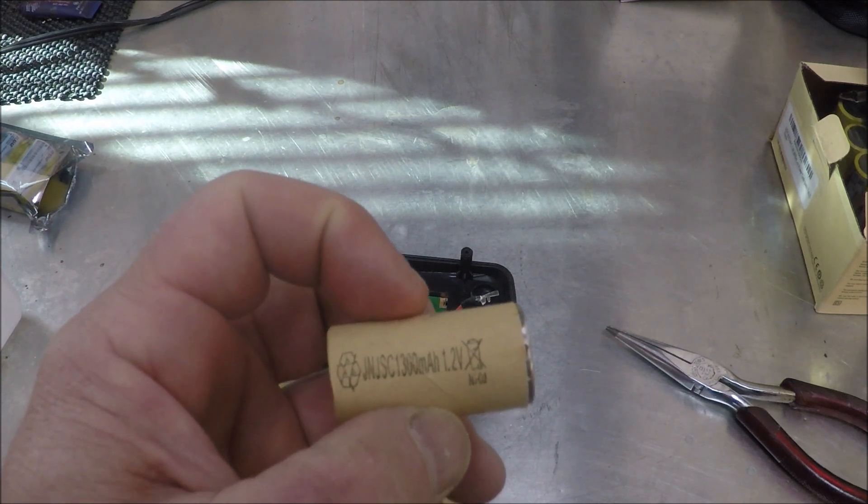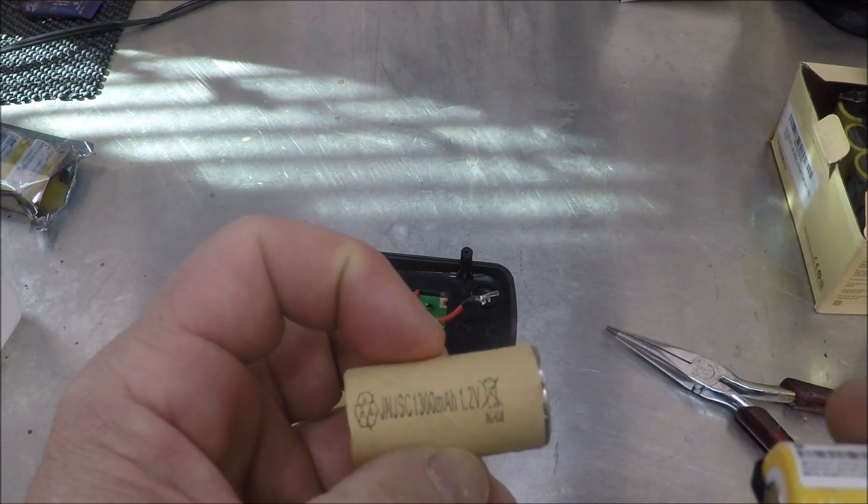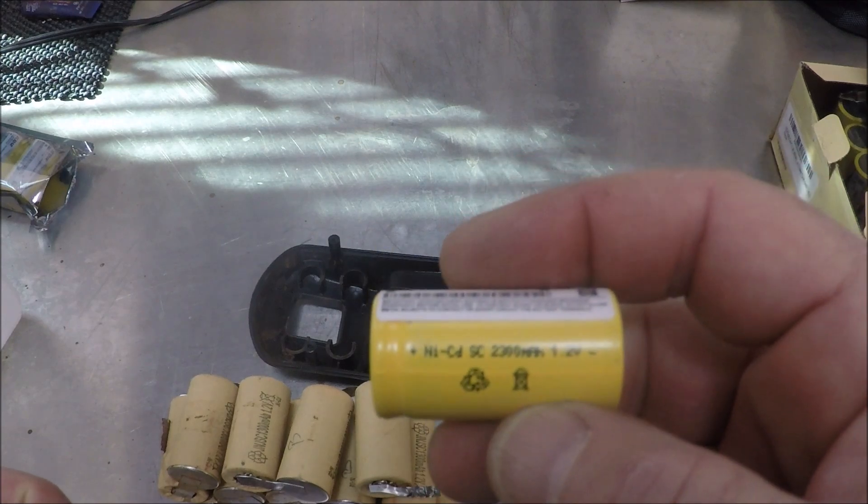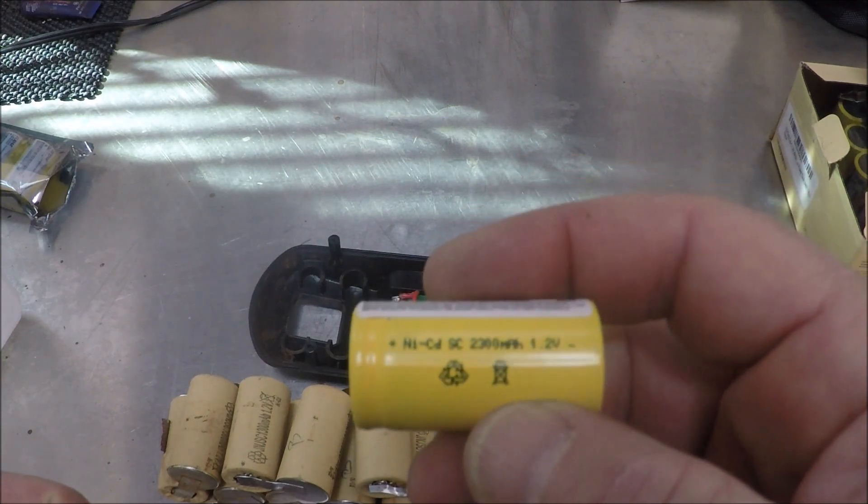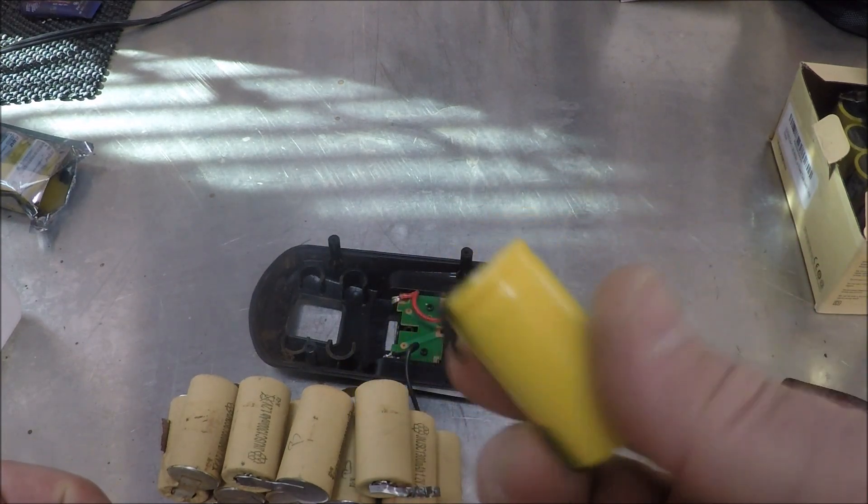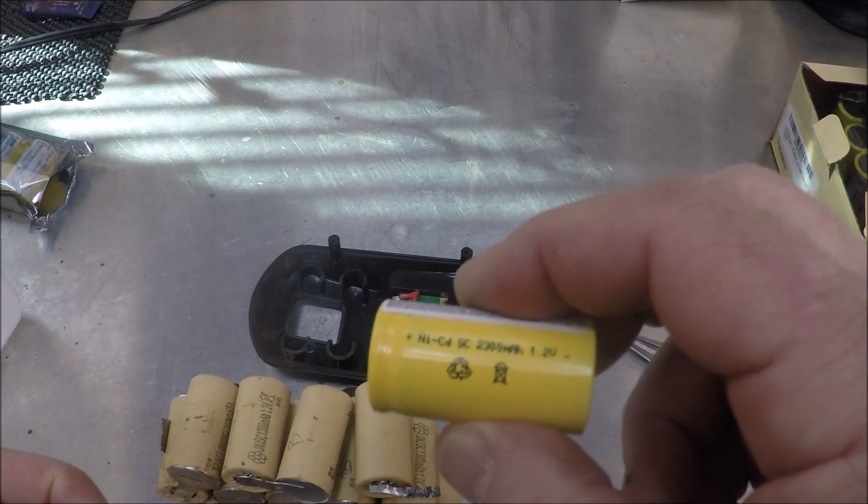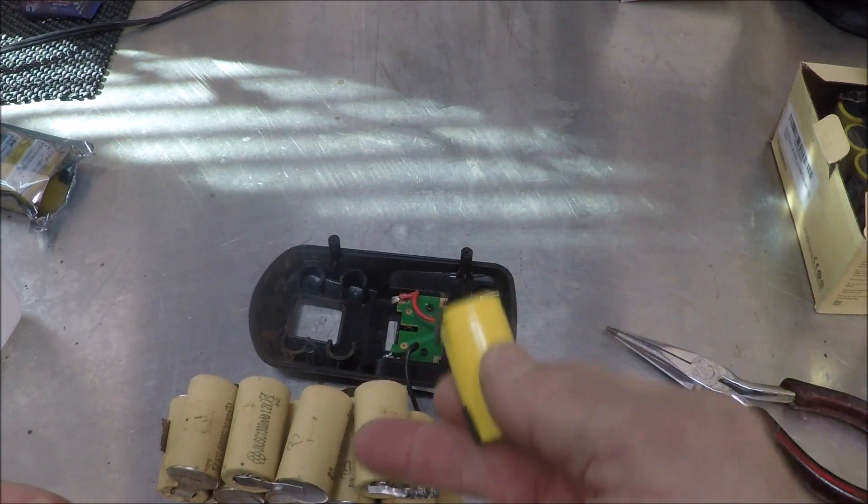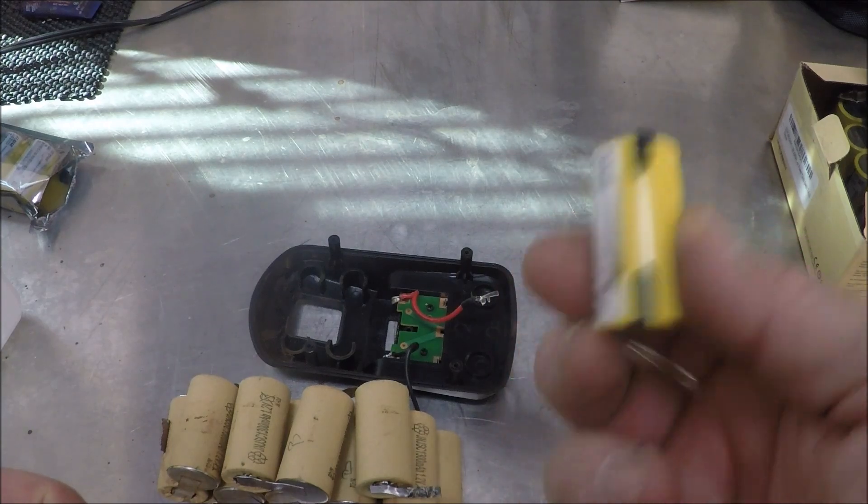The old batteries are 1.2 volts at 1,300 milliamp hours. The new ones, same voltage, but these have 2,300 milliamp hours. So these should last a lot better. I'm hoping there's not a problem with the compatibility between the lower milliamp hour batteries and the bigger ones, but we'll see.